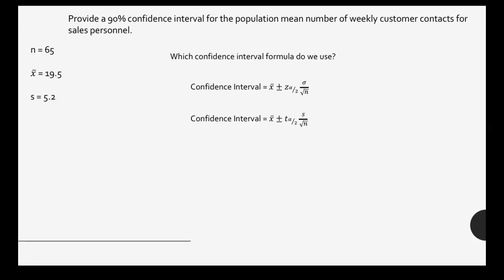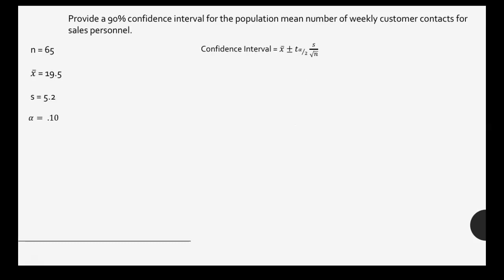With our information, we notice that none of those proofs work out in this case. Our n isn't greater than 100, sigma is not given, and we were not told that it was normally distributed and bell-shaped. So none of those work out, meaning we will have to use a t-score.